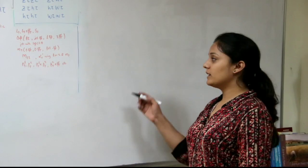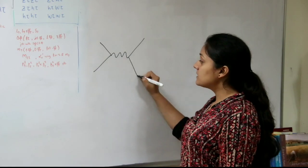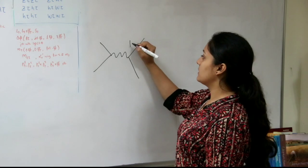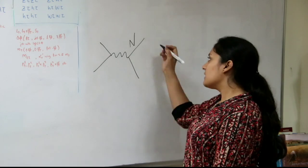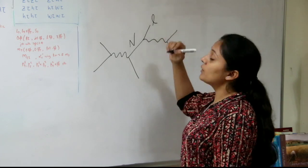When we collide two protons in large hadron collider at CERN then sometimes these heavy neutrinos can be produced in the collision and they decay into standard model particles and through these decays we can study or we can find these heavy neutrinos.